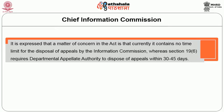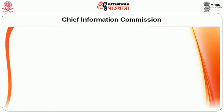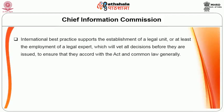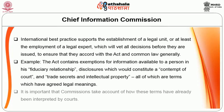A matter of concern in the Act is that it currently contains no time limit for the disposal of appeals by the information commission, whereas Section 19(6) requires departmental appellate authorities to dispose of appeals within 30 to 45 days. Ideally the same time limit of 30 to 45 days should be adopted by information commissions. International best practice supports the establishment of a legal unit to vet all decisions before they are issued, to ensure they accord with the Act and common law. The Act contains exemptions for information available to a person in a fiduciary relationship, disclosures which would constitute contempt of court, and trade secrets and intellectual property — all of which are terms with agreed legal meanings — and it is important that commissions take account of how these terms have already been interpreted by courts.